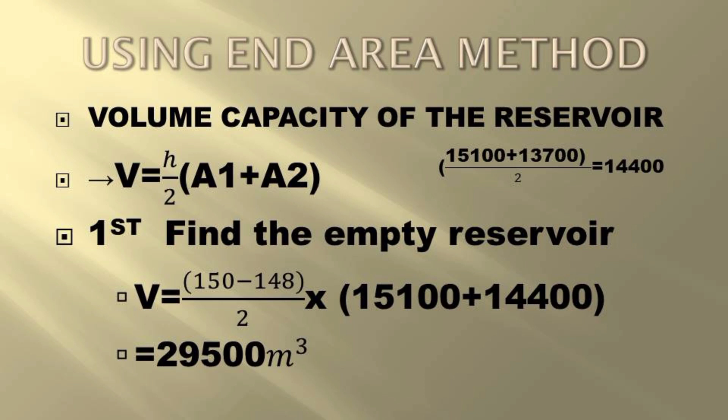So 150 minus 148 over 2, then into brackets our areas have been provided. Having done that, we'll get our volume for the empty reservoir. After a proper calculation, that is the answer we get.